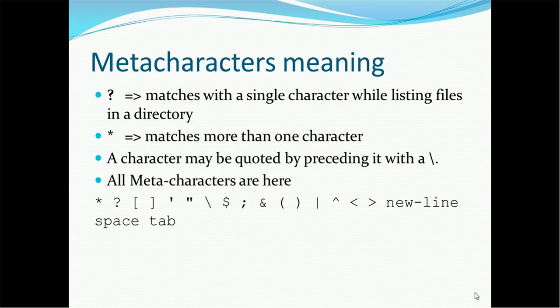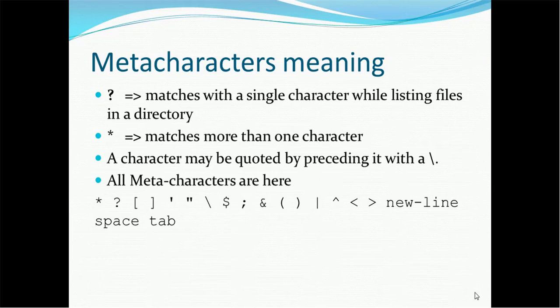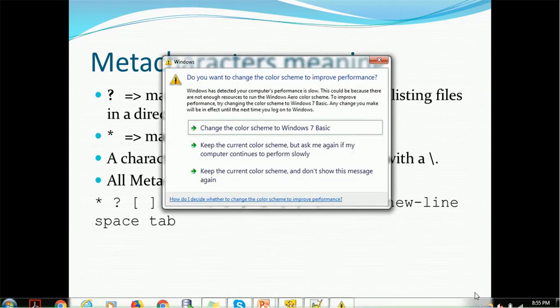What are meta characters? Meta characters are the special characters in Unix which have special meaning. For example, the question mark matches with a single character while listing files in a directory. So if you want to check the files and if you forget any character, you can use the question mark and it will replace any character. The asterisk sign matches more than one character.